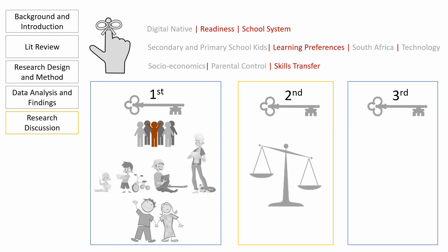In our third key finding we concede, which is in line with literature, that there is no denying that there are major improvements technology can bring to the learning environment. However, a significant number of students were concerned with the self-discipline that comes with the use of technology in the classroom, because their experience is that they use tech for socializing and entertainment and they feel that access to those things will be distracting. Our study also found that while kids were exposed to technology, their proficiency in the use of this tech is not at the same level that literature suggests, so there would need to be a huge learning curve for the kids to use tech in the classroom.